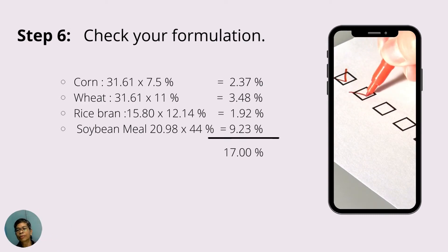Our last step is to check if our formulation is correct. To do that, just multiply the amount of each ingredient by its CP content.